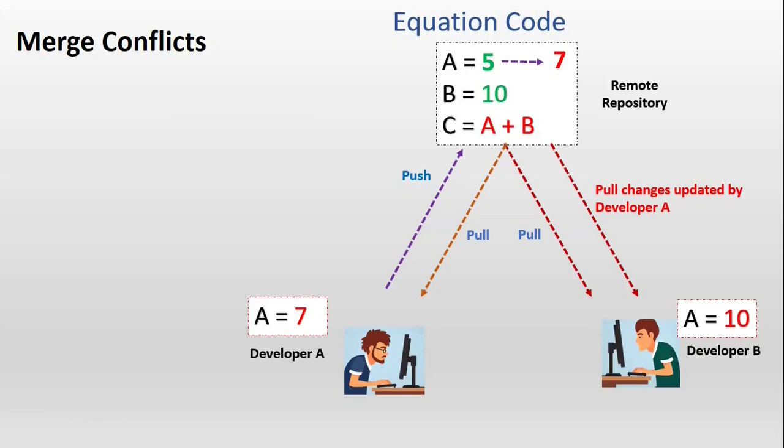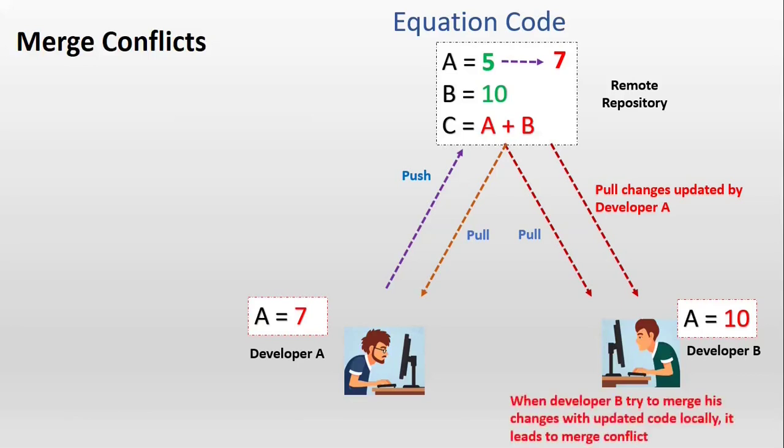Since developer A has made this change, he should understand why that value has been assigned. And accordingly they have to fix the code. So they have to decide which value to be considered to resolve this merge conflict, and accordingly update the A value and resolve the conflict.